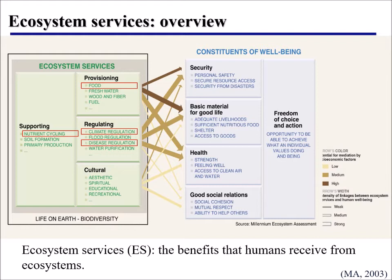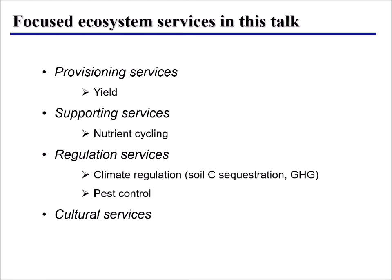The third type is regulation services, which include climate regulation, disease regulation, and so on. The last one is cultural services — for example, recreational services. In this talk, I will focus on a few ecosystem services, including yield, nutrient cycling, climate regulation, and pest control.